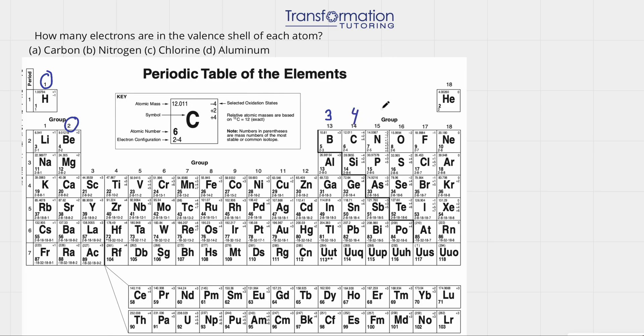Group 14 has 4, group 15 has 5, group 16 has 6, group 17 has 7, group 18 has 8. Helium has atomic number 2, so it has only two valence electrons.